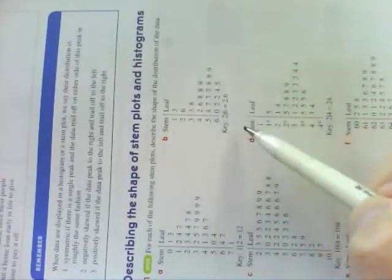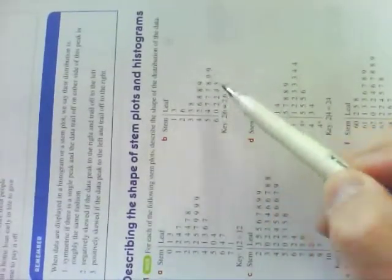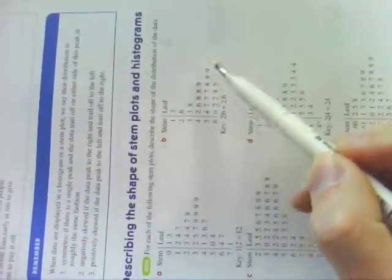Whereas this one up here has its peak over on the right, which means it's negatively skewed.